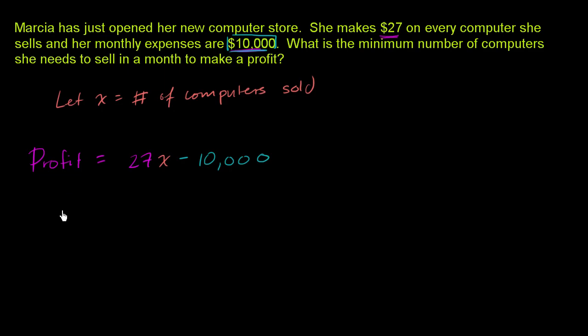So let's see what gets her to breakeven. Breakeven, that's zero profit, neither positive or negative, is equal to 27 times, and I'll do it all in one color now, 27x minus 10,000. Well, we've seen equations like this before.